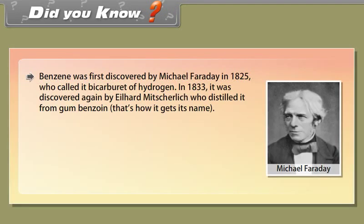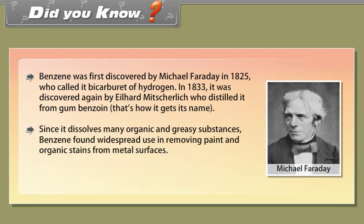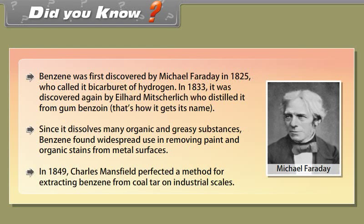Did you know? Benzene was first discovered by Michael Faraday in 1825, who called it bicarbureate of hydrogen. In 1833, it was discovered again by Eilhard Mitscherlich, who distilled it from gum benzoin — that's how it gets its name. Since it dissolves many organic and greasy substances, benzene found widespread use in removing paint and organic stains from metal surfaces. In 1849, Charles Mansfield perfected a method for extracting benzene from coal tar on industrial scales.